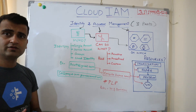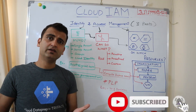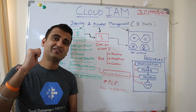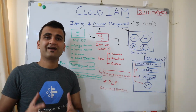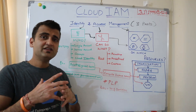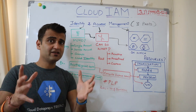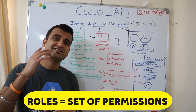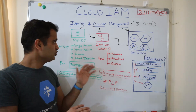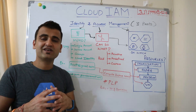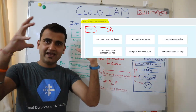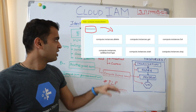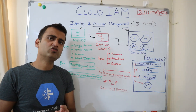Coming to roles: as I said, when you entered the company as a visitor, you were given the role of visitor and that decided your access. Similarly, there are majorly three types of roles. Roles are nothing but a set of permissions — because there are thousands of permissions, it's practically impossible to assign them individually. So Google created buckets and put various permissions into them based on the role. There are three major categories of roles.